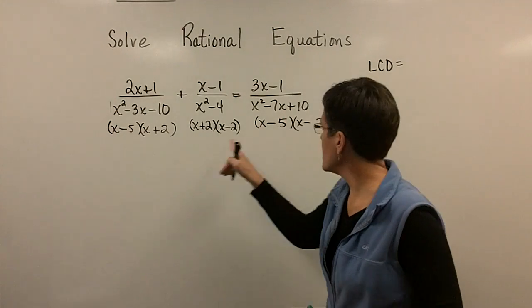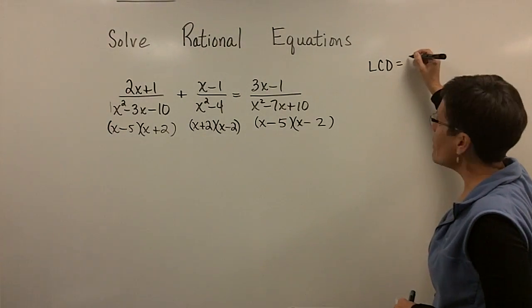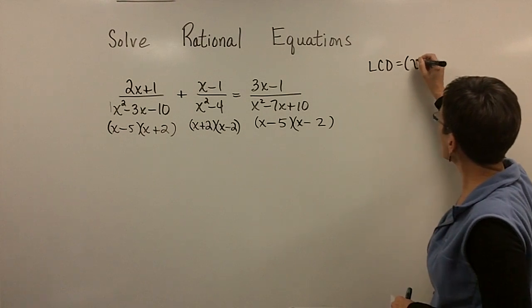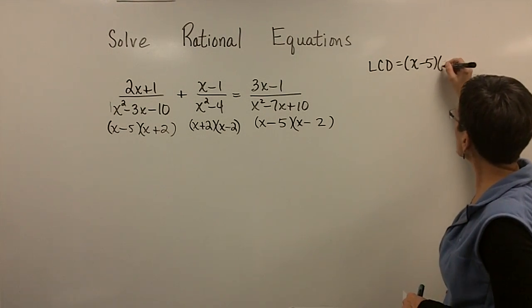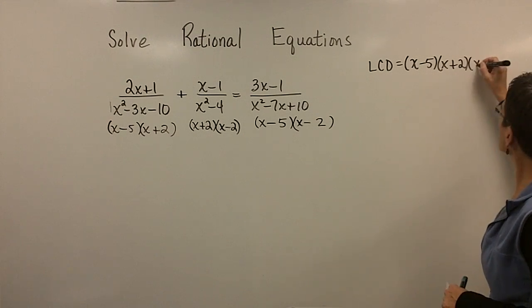But x plus 2 occurs once here, once here, I'll use it once. x minus 5 once here, once there. x minus 2 once there, once there. There are three binomials. It doesn't matter what order you write them in. I'm going to write them as x minus 5, x plus 2, and x minus 2.